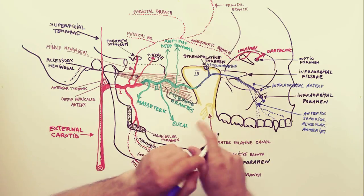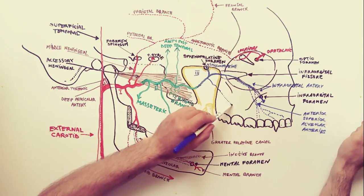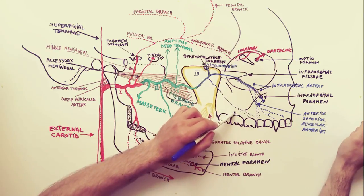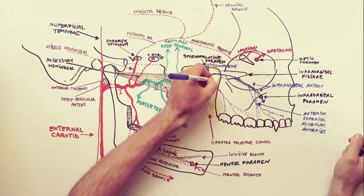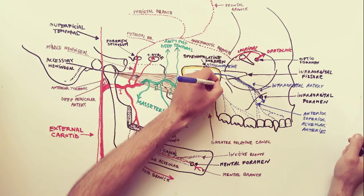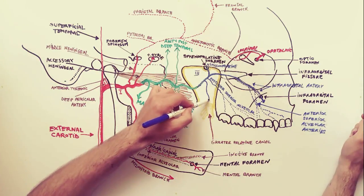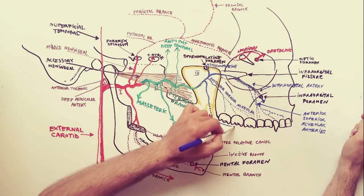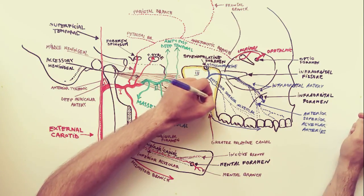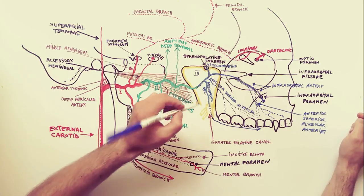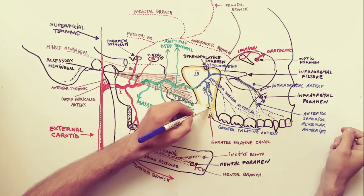The posterior superior alveolar artery is given off from the third part of the maxillary artery and descends upon the tuberosity of the maxilla. It divides into numerous branches, some of which enter the alveolar canals to supply the molar and premolar teeth and the lining of the maxillary sinus, while others continue forward on the alveolar process to supply the gingiva. Another branch is the descending palatine artery, which gives rise to greater and lesser palatine arteries accompanying the palatine nerves downward in the palatine canals. The greater palatine, after emerging through the greater palatine foramen, turns forward and supplies the hard palate and the inner gums of the upper teeth.